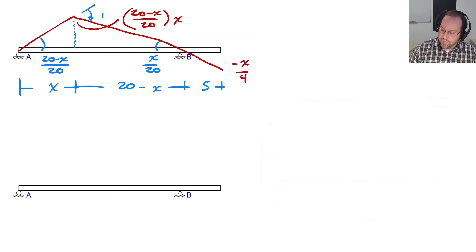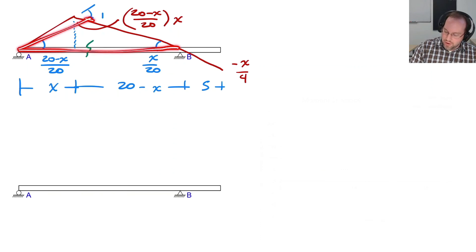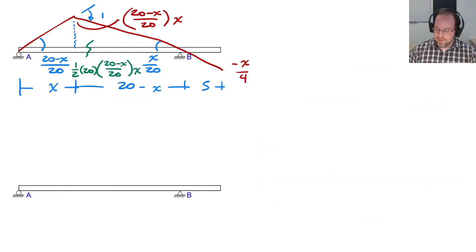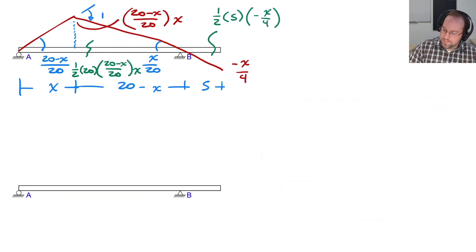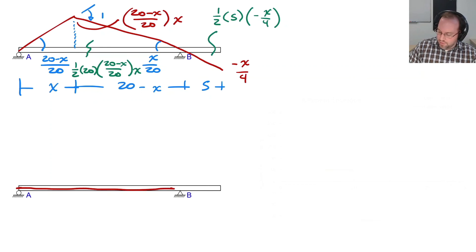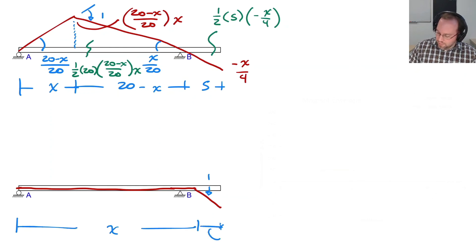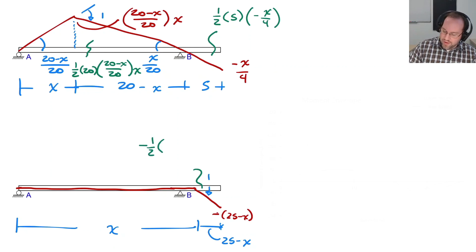The area of the full positive triangle from 0 to 20 is (1/2) × 20 × ((20 − x)/20 × x). The cantilever negative triangle area is (1/2) × 5 × (−x/4). For the cantilever span influence line, it's a straight line that changes slope by 1 at x — the total distance is x and the remaining is 25 − x — giving a value of −(25 − x) at the end. The negative area there is −(1/2) × (25 − x) × (25 − x).